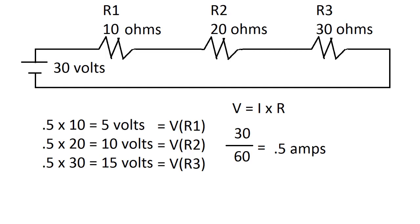We just take 0.5 times 10 which equals 5 volts for the voltage for resistor one, and we have 0.5 times 20 which equals 10 volts, the voltage for resistor two, and we take 0.5 times 30 which equals 15 volts for the voltage of resistor three.